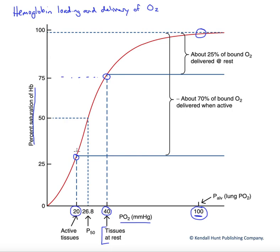And so we nearly triple the amount of oxygen being delivered simply by having the partial pressure of oxygen fall at the tissues due to increased use. This is ideal.